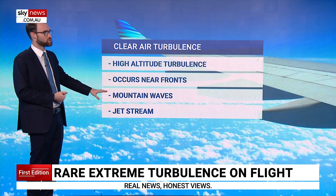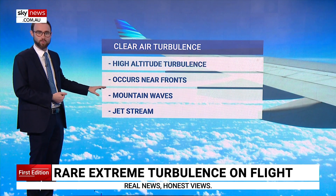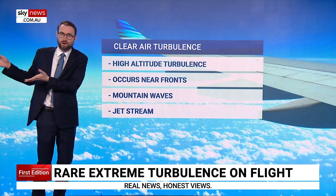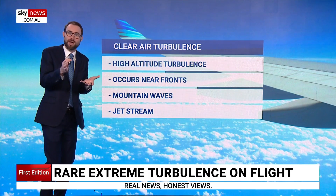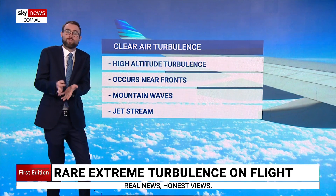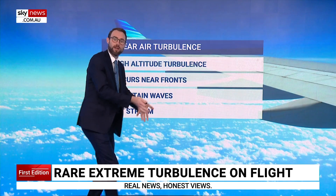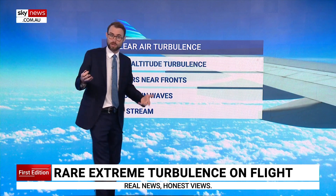It can also occur downstream from mountain waves. When you've got air travelling over a mountain, it gets forced upwards and then goes down and up and down, and that can cause turbulence.